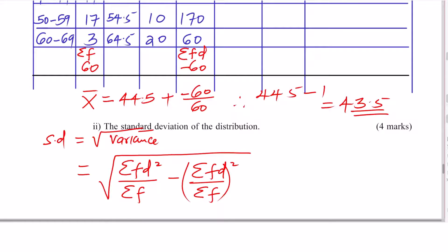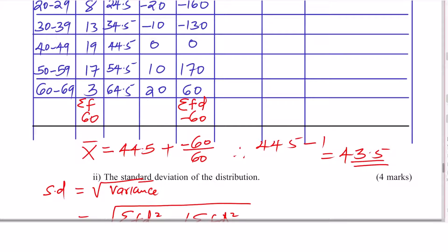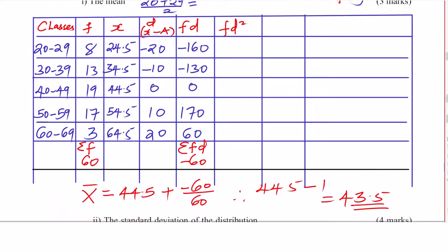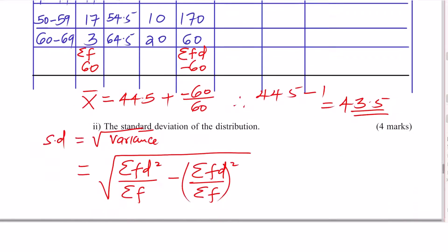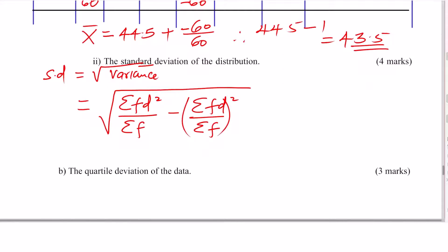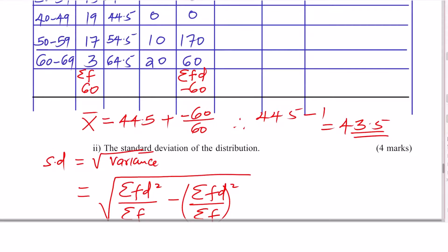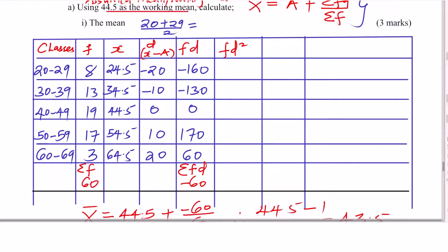From this formula you'll know the columns you need. I will need an FD² column. That is the only column I need to add, because summation of FD is already there, and summation of frequency is already there. So let us prepare the summation of FD² column.